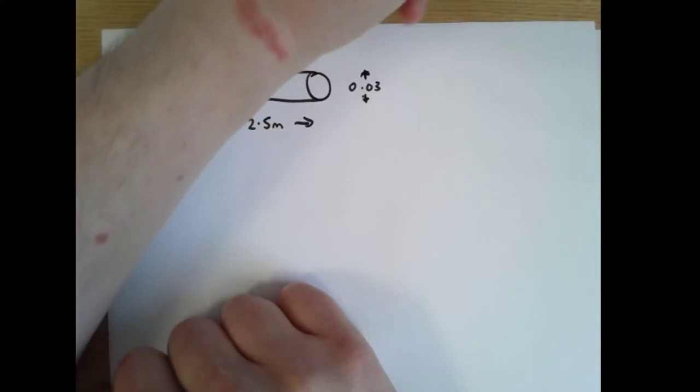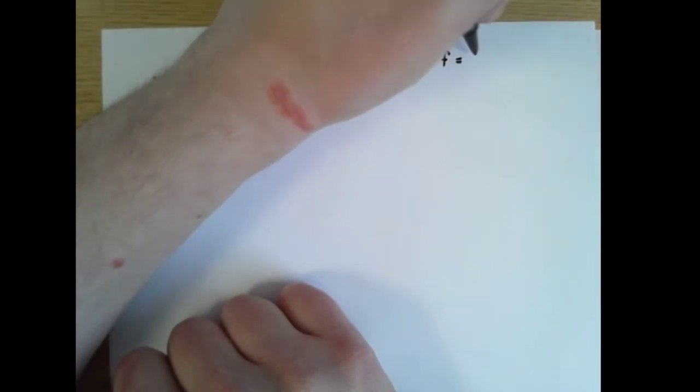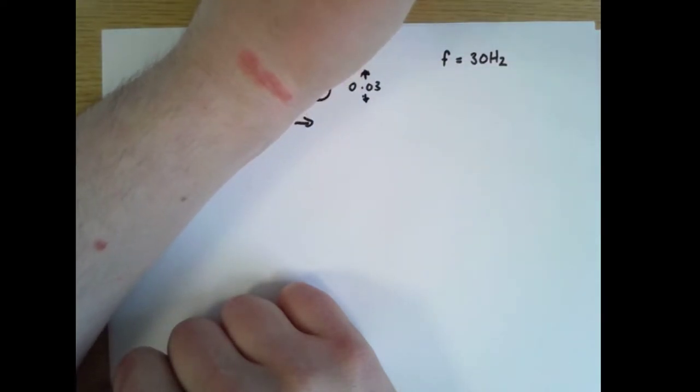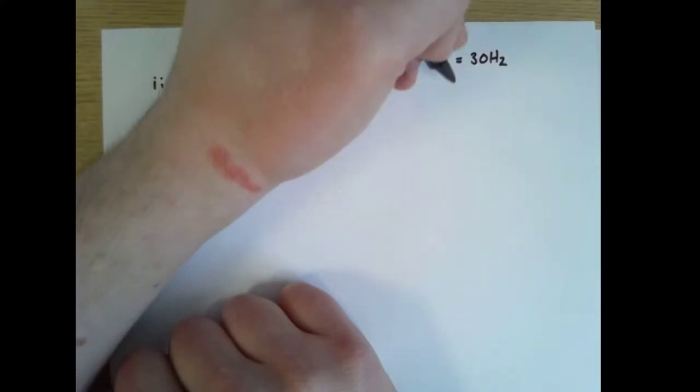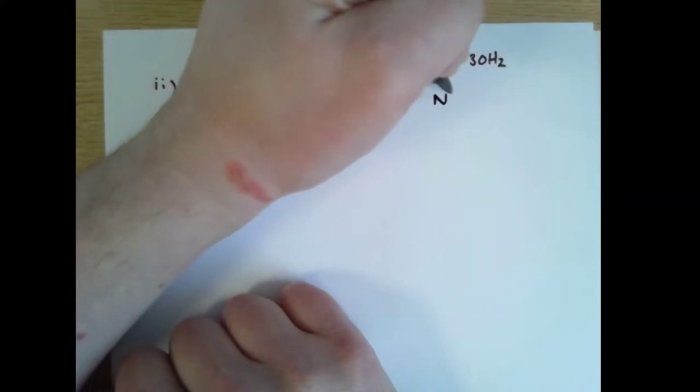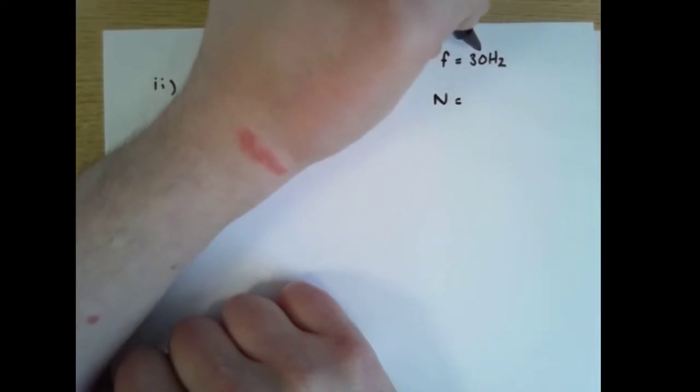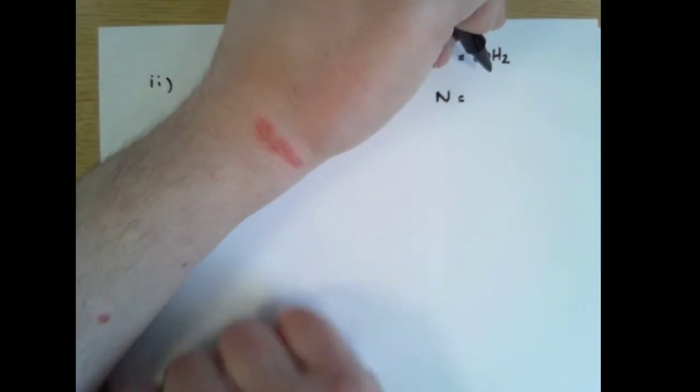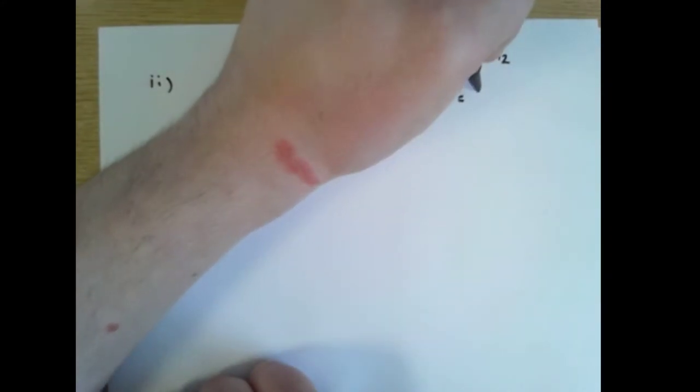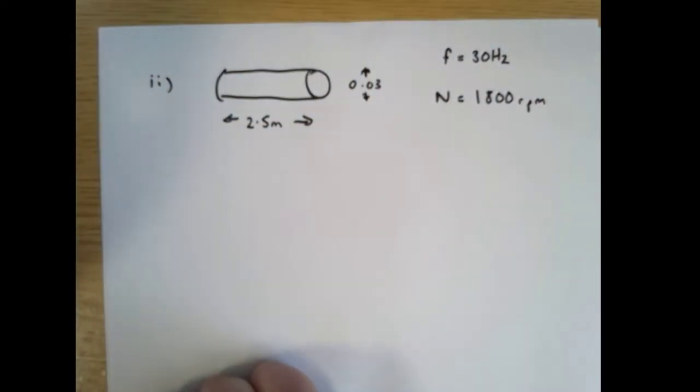It's rotating at a frequency of 30 Hertz. Hertz is the number of rotations per second. The formula in the formula sheet is given either in radians per second or in rpm. If it's 30 times a second then it's 30 times 60, so multiply this by 60 and that will give us 1800 rpm and that's probably going to be a useful number to have for this.